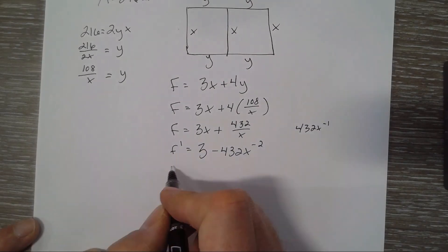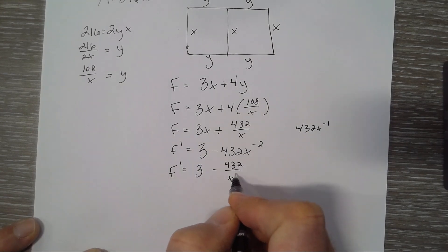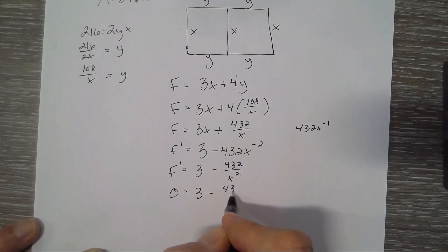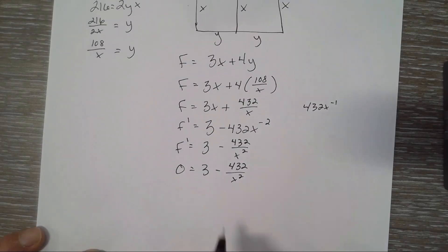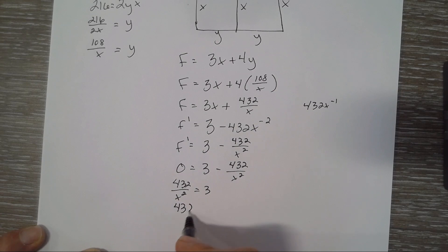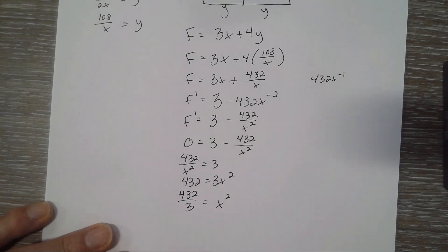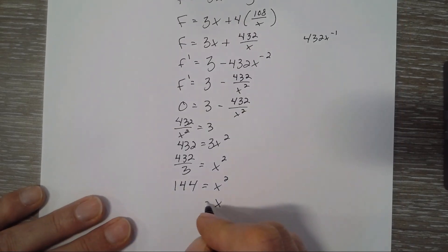So we have our derivative and we can set that equal to 0 and solve and figure out what X is. So I'm going to add this. So I'm going to add this one because it's negative. 432 over X squared equals 3. Multiply by X squared. 432 over 3. That's divisible. So X squared equals 144. So X square root, so it would be 12.